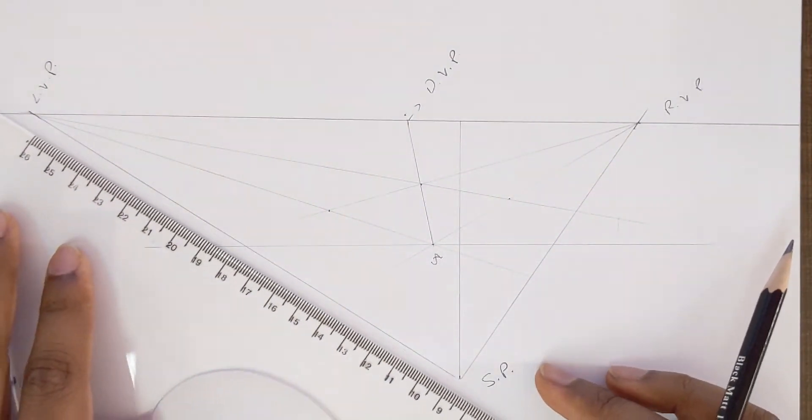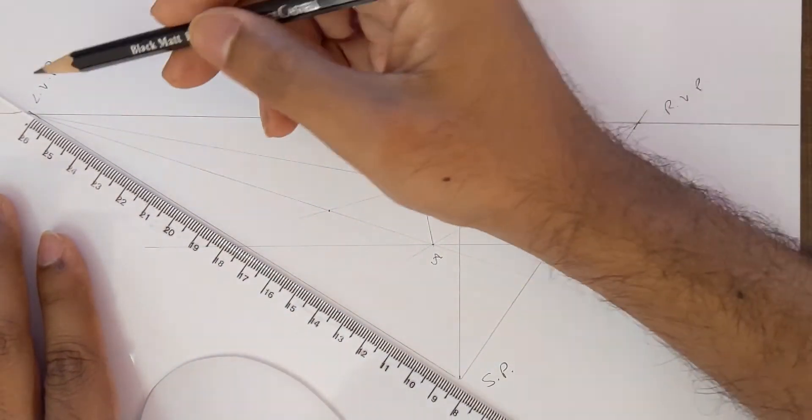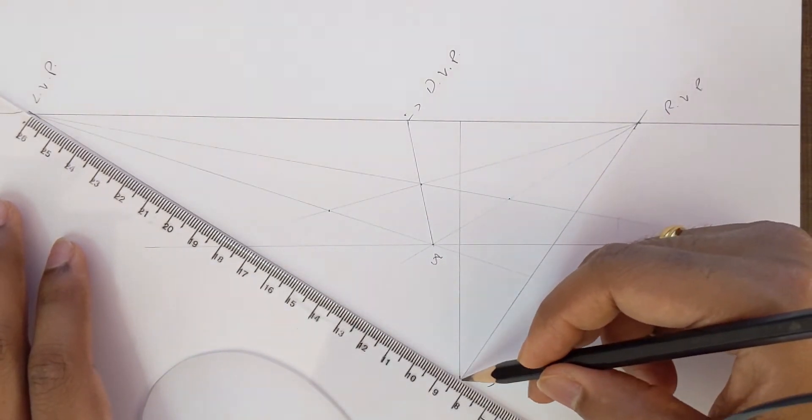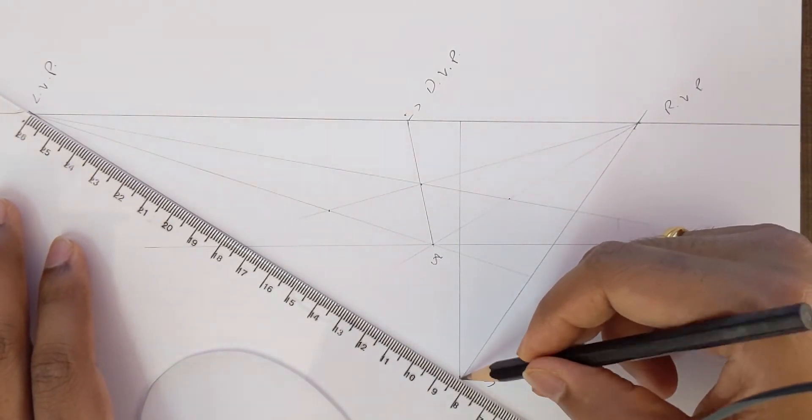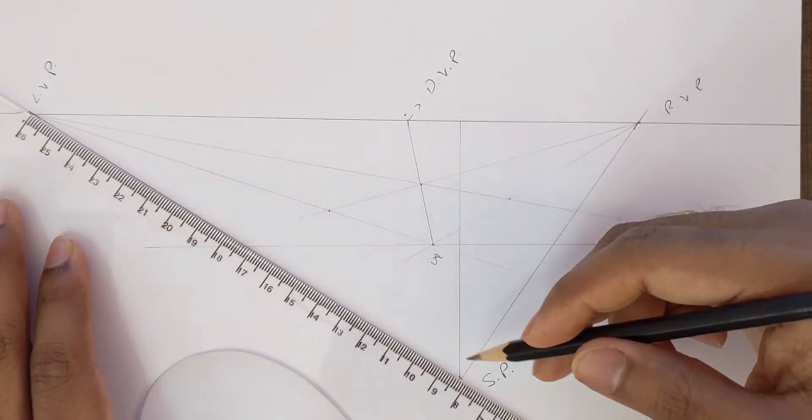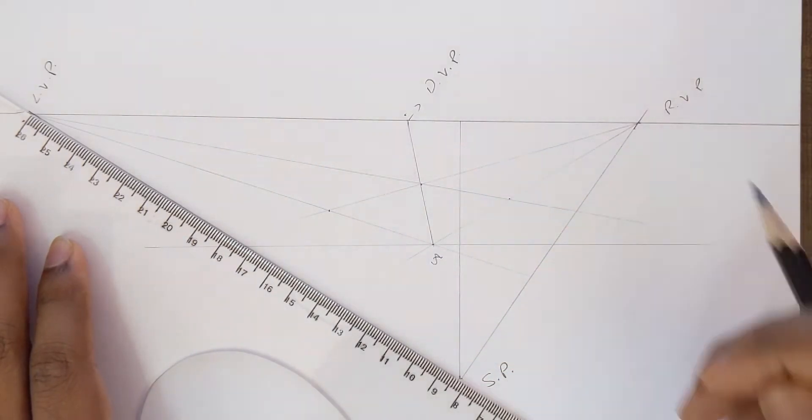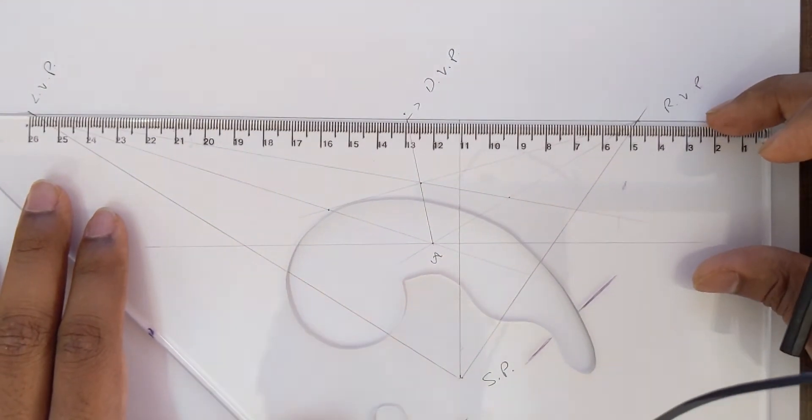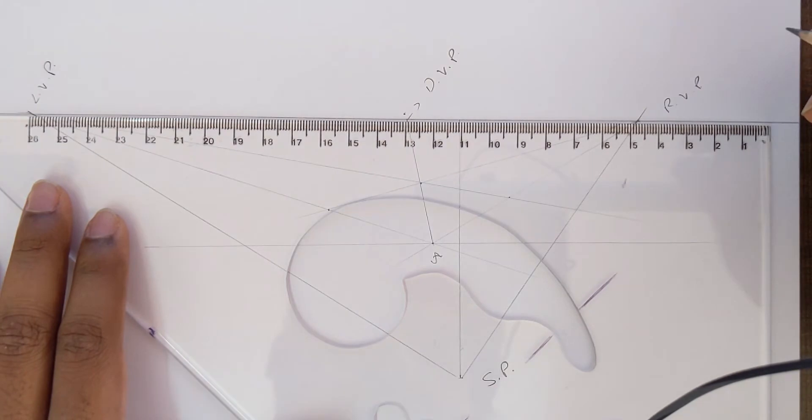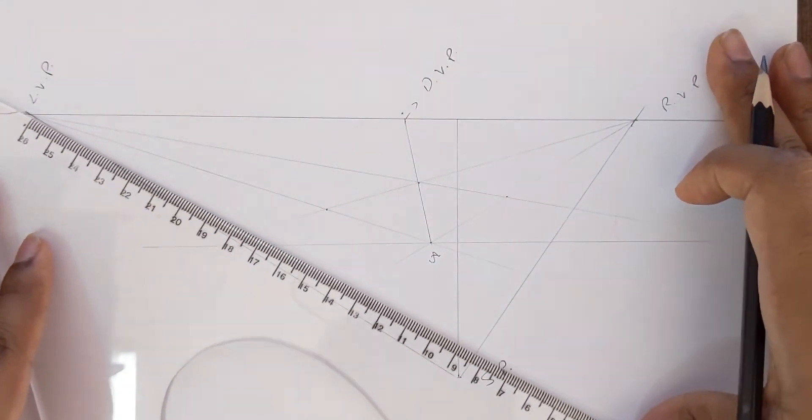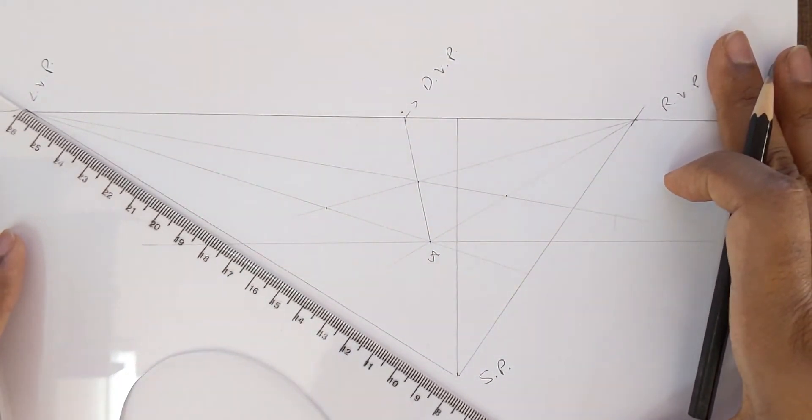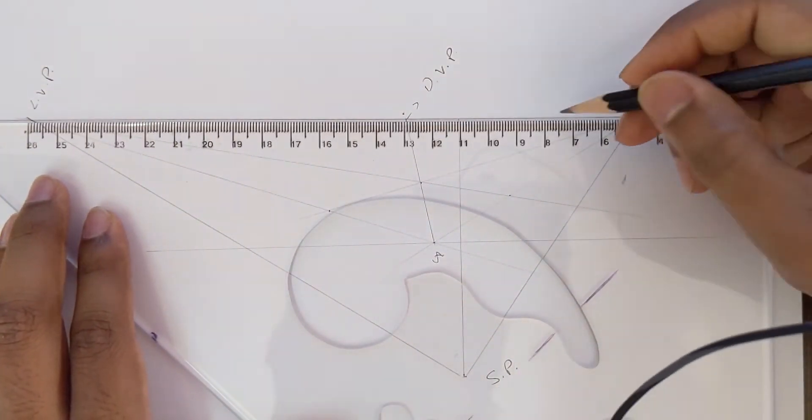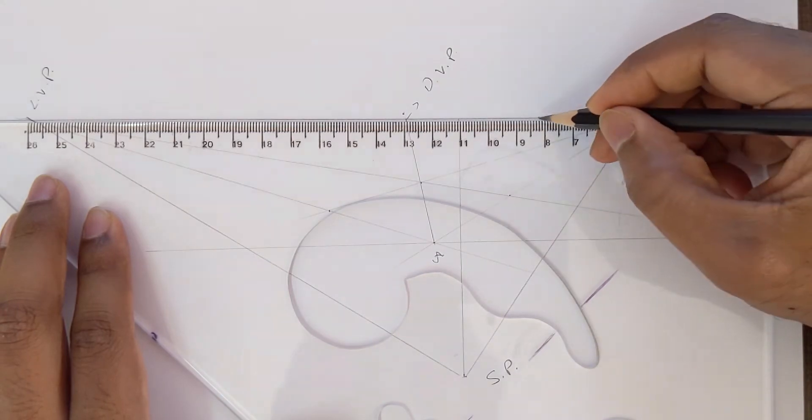Next, measure the distance between our left vanishing point and the station point. Let's say it is about 18, yeah 80 centimeters, and translate the same distance onto the horizon line. Measure it, yeah okay, it is so much.